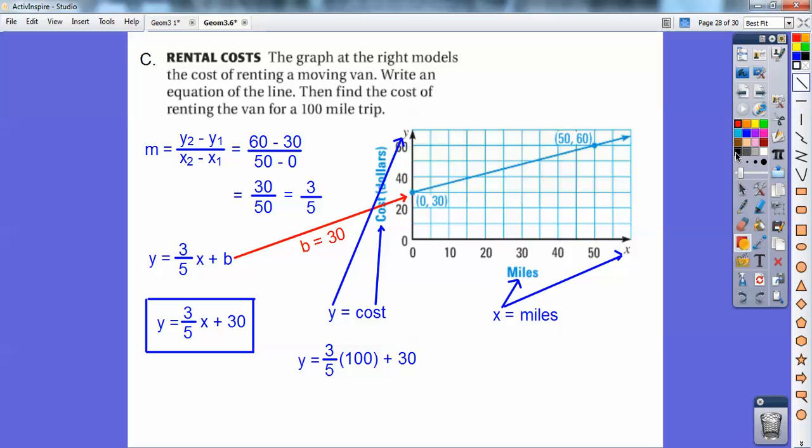So plug in 100 right there. So 5 goes into 100 twenty times and 3 times 20 is 60. 60 plus 30 is 90 bucks.